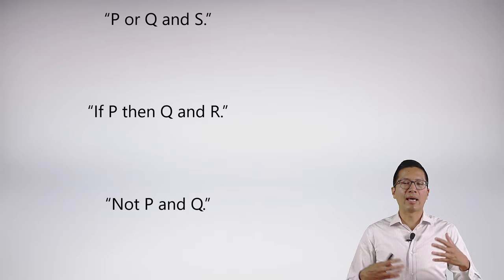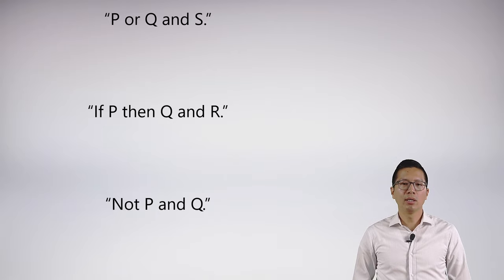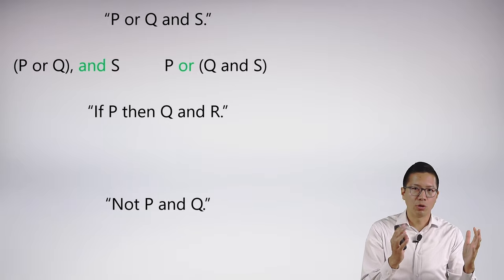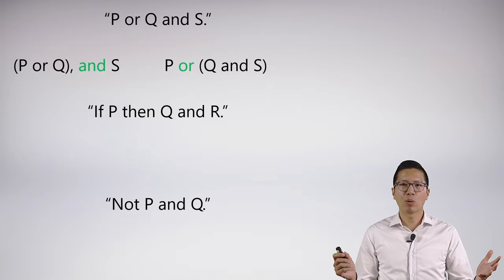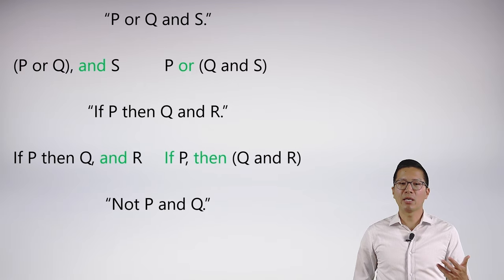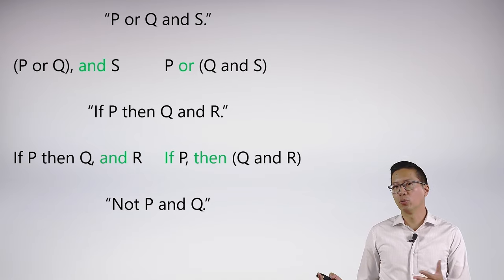There are lots of examples of ambiguity that we can come up with. Here are just some more common examples that we'll walk through pretty quickly. So the first one is if I say 'P or Q and S,' well there are two ways of understanding this. Am I saying '(P or Q) and S' or am I saying 'P or (Q and S)'? And once you write it out in this way, symbolizing each of them is very straightforward. Similarly, if I say 'if P then Q and R,' am I saying 'if P then (Q and R)' or am I saying '(if P then Q) and R'?